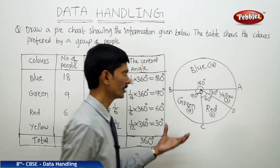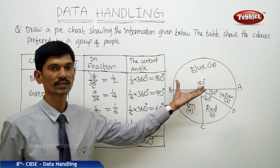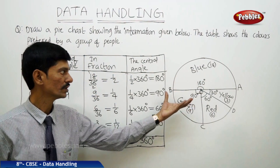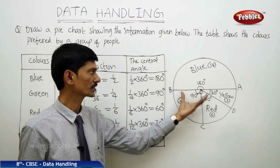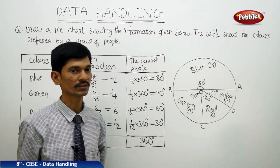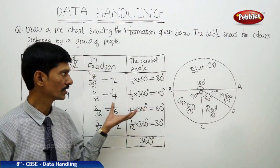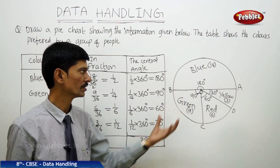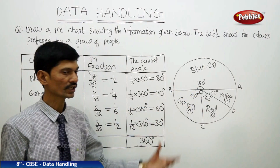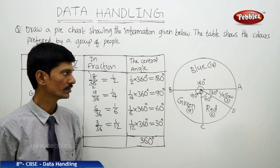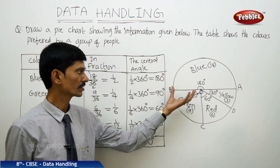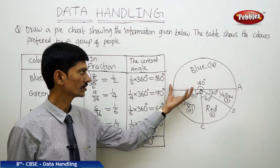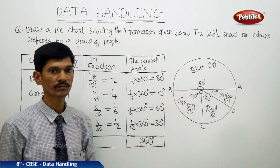In this way, a circle is divided into different sectors, which is why a circle graph or pie chart shows the relation between the whole circle and its parts.